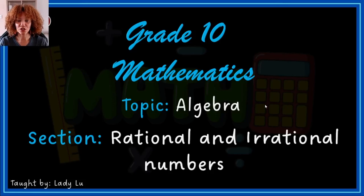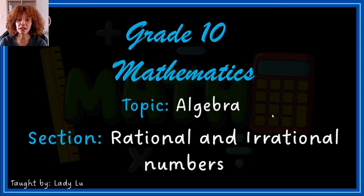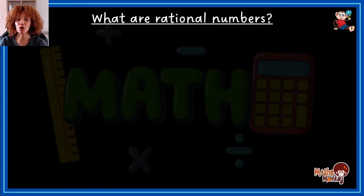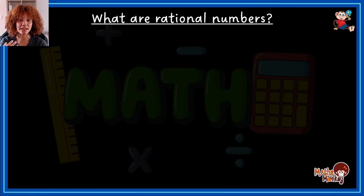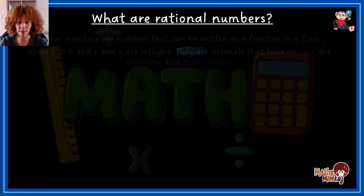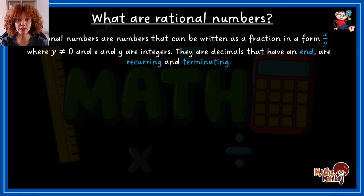This is your lesson on algebra, specifically looking at rational and irrational numbers. I like to start at the very beginning before we jump into calculations — I want to make sure you understand the definitions of all the words I'll be using. So, what are rational numbers? The formal definition is: rational numbers are numbers that can be written as a fraction.